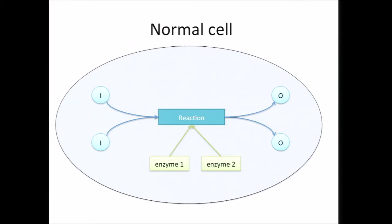Cells are smart, and they want to regulate these types of reactions. Within cells, we have biological enzymes that regulate these reactions. Cells don't rely on only a single copy of the enzyme — they usually have multiple enzymes that catalyze the reaction. In this case, we have two enzymes; you can have two or sometimes more than two. These types of enzymes are called isoenzymes in the biological context.